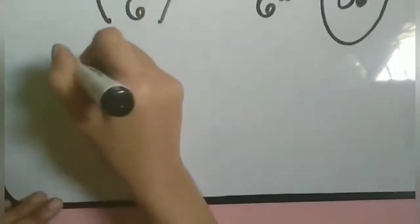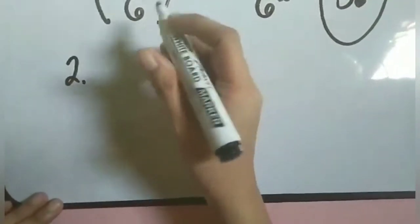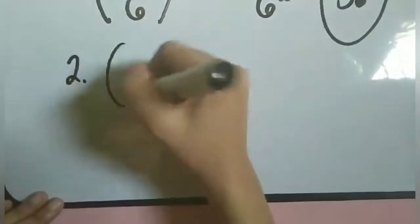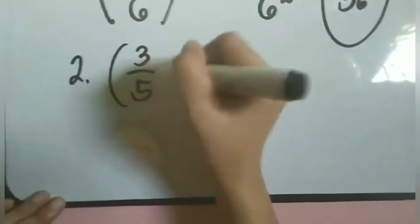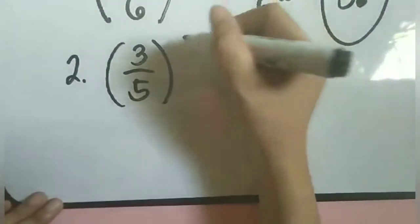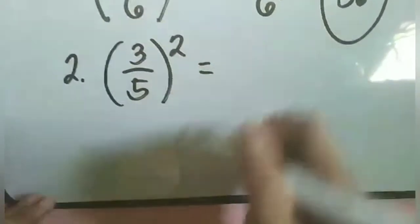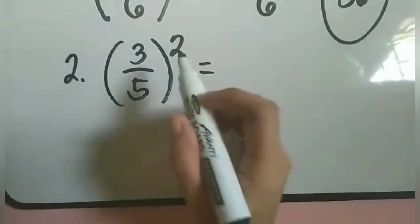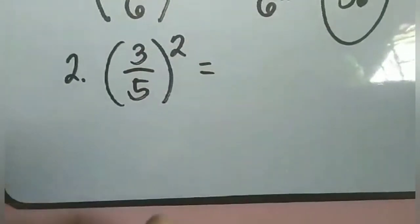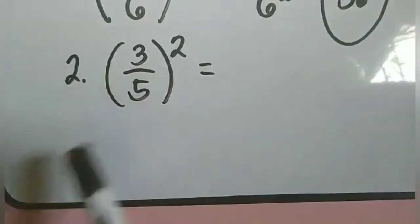Number 2: we have the quantity 3 over 5, raised to 2. Ganun pa rin — ang ating exponent ay 2, so i-distribute natin siya sa numerator at denominator.